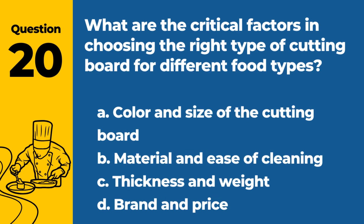Question 20. What are the critical factors in choosing the right type of cutting board for different food types? A. Color and size of the cutting board. B. Material and ease of cleaning. C. Thickness and weight. D. Brand and price. Answer: B. Material and ease of cleaning. The critical factors in choosing a cutting board for different food types are the material of the cutting board and how easy it is to clean.